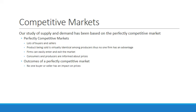This leads to certain outcomes within a perfectly competitive market. First, no one buyer or seller has an impact on prices, because the product is identical and there are so many people within the market — nobody actually affects the market when they enter or leave it. Second, both consumers and producers accept the equilibrium price; because nobody can influence the price, whatever it is, that's what they're taking.